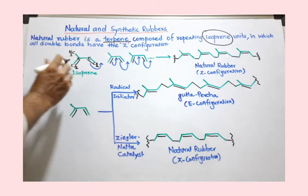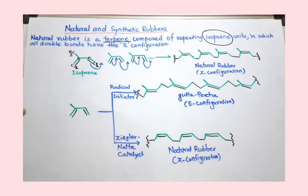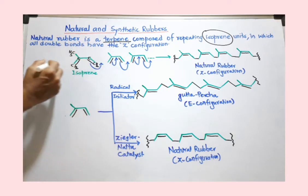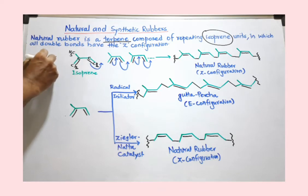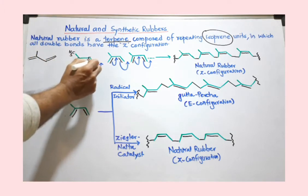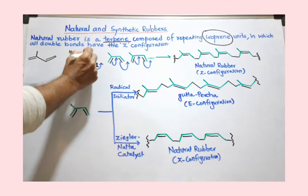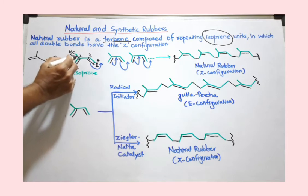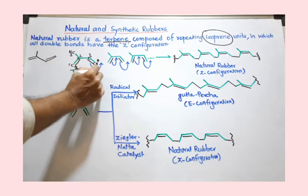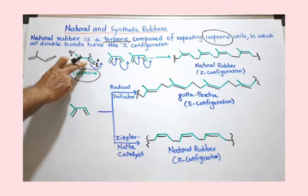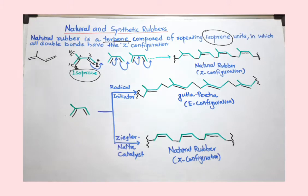Before we start our discussion, note that you can write isoprene in two ways. It is actually a butadiene — specifically 1,3-butadiene — where a methyl group is present at the second carbon. So 2-methyl-1,3-butadiene is nothing but isoprene. You must remember this.